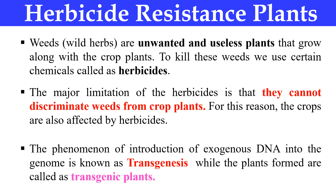To make the plant herbicide resistant, we transfer certain foreign genes inside our plants. These genes give specific properties to the plant so that it becomes resistant against the action of herbicides. The process by which we transfer these genes to the plant is known as transgenesis, and the plant formed after the transfer of these genes is known as a transgenic plant. In this video I will focus specifically on herbicide resistance plants.